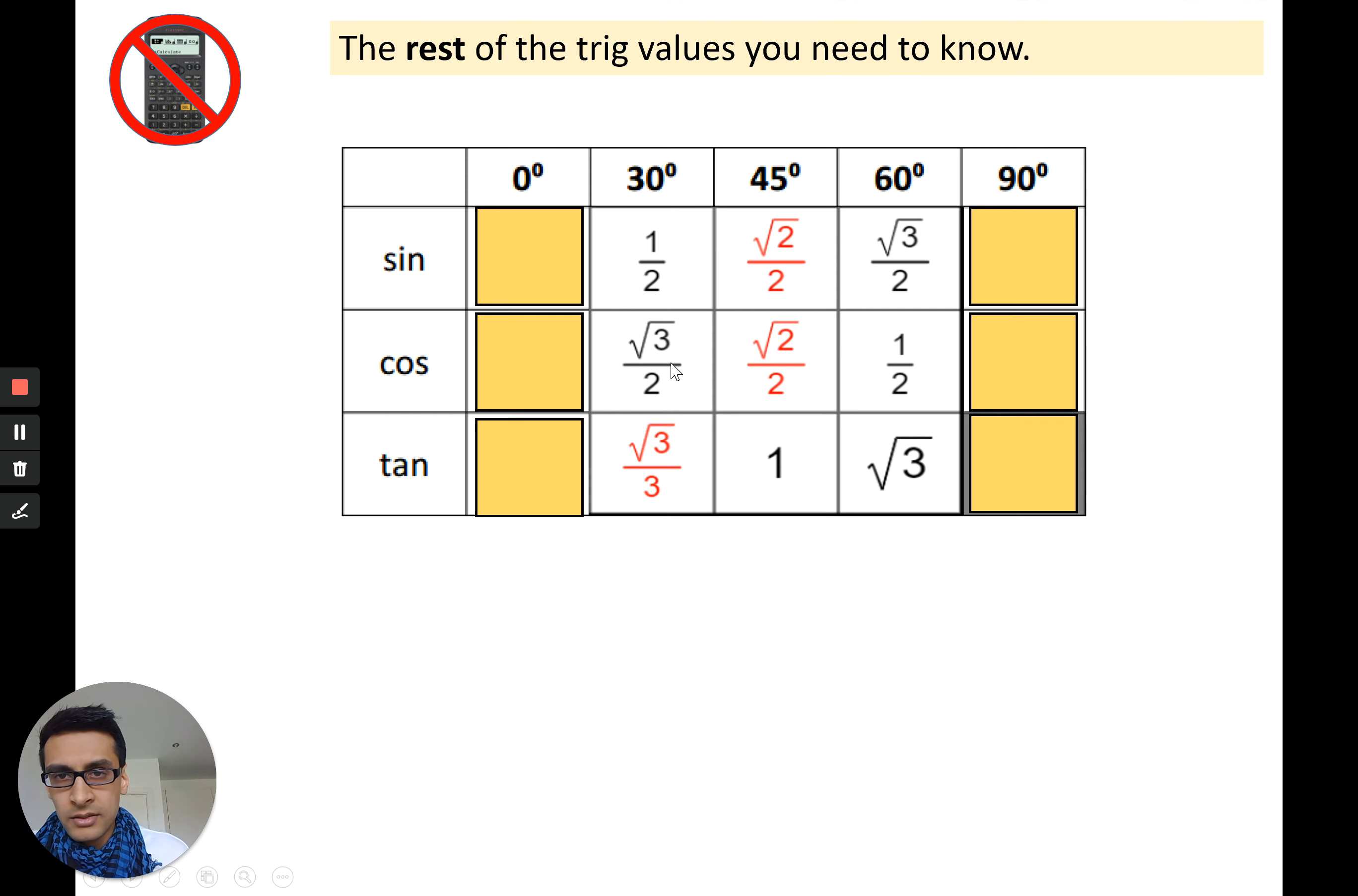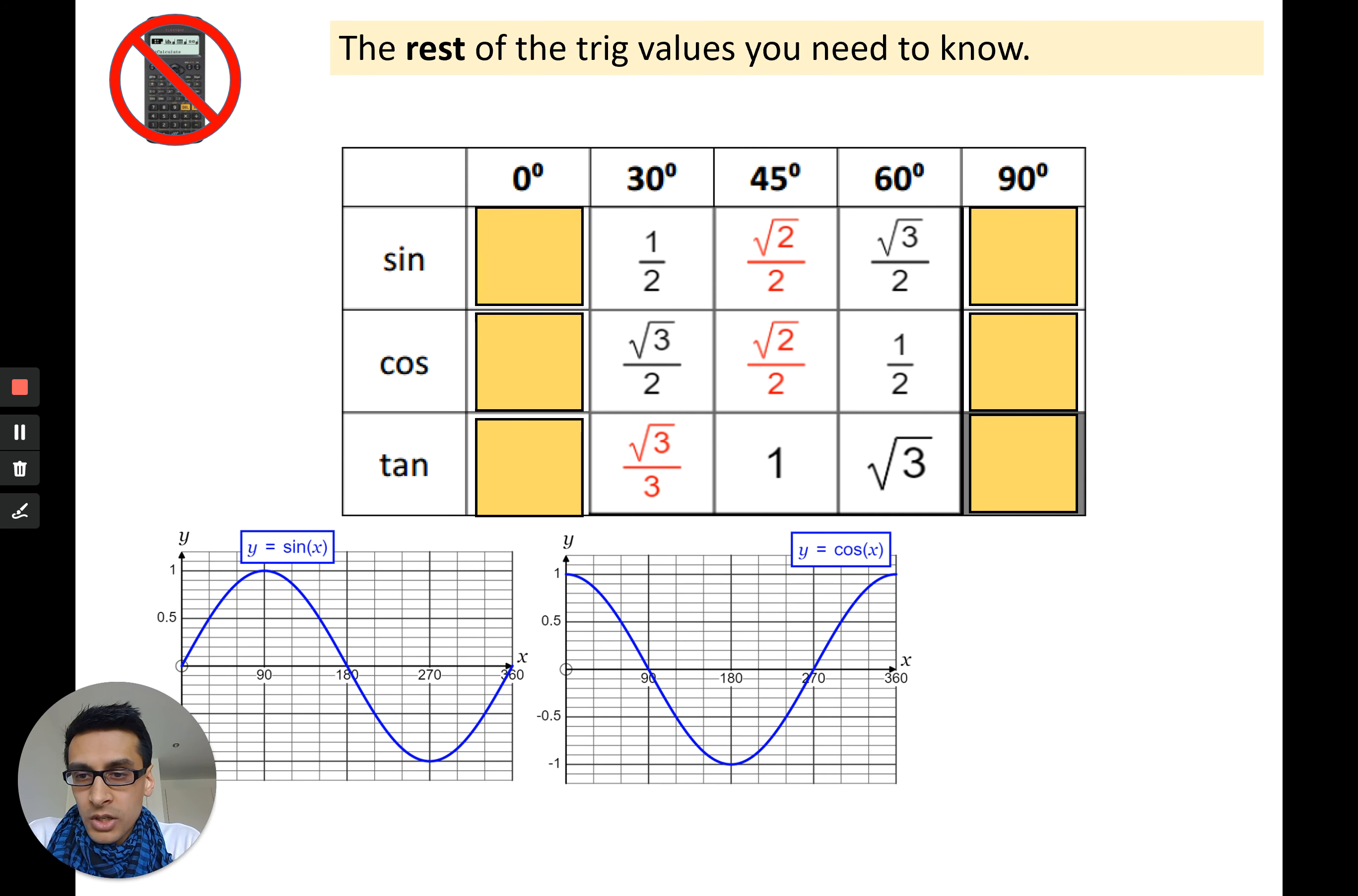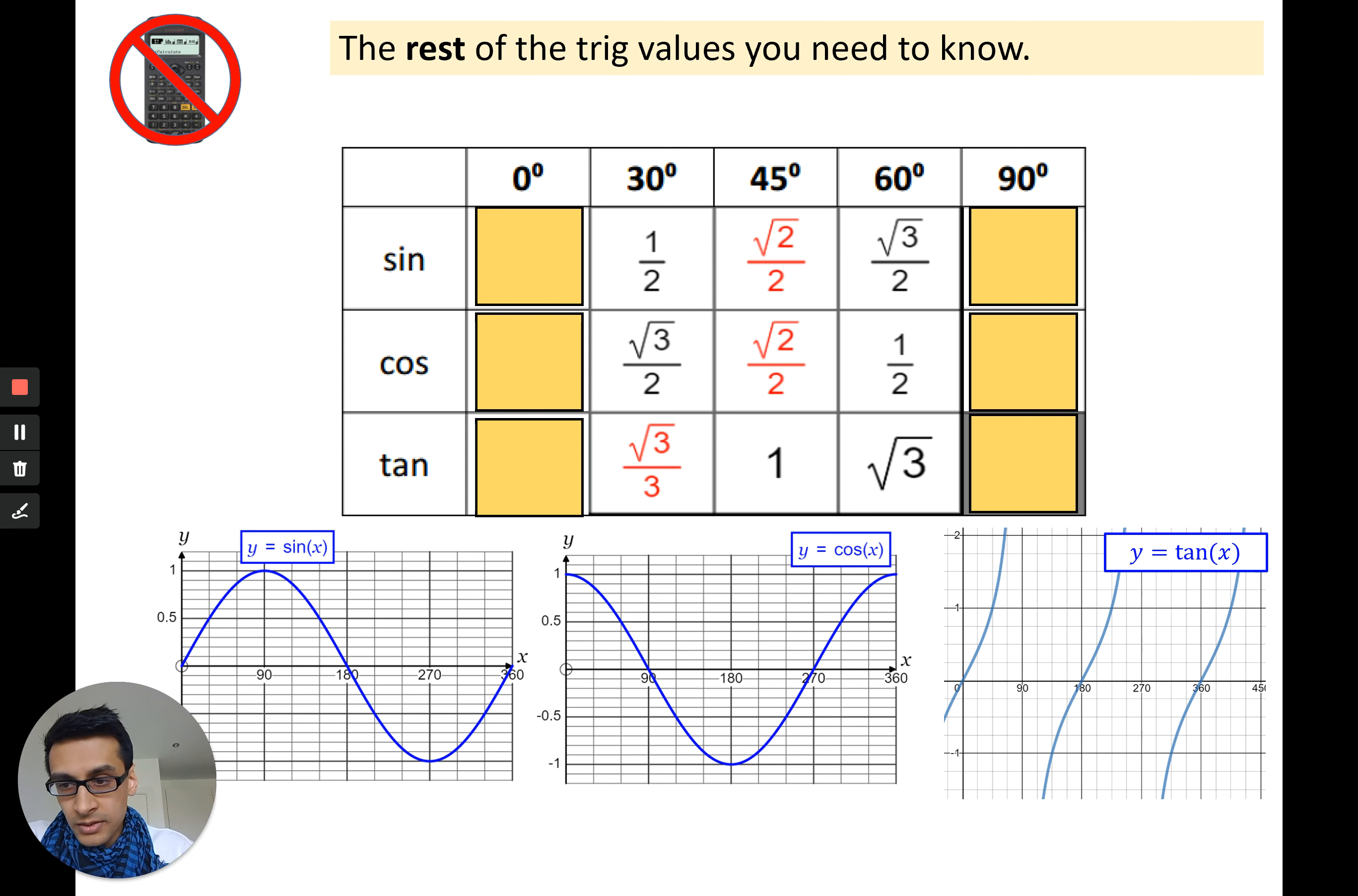The rest of the trig values you need to know include 0 and 90. You very rarely come across them, but they're actually fairly straightforward to memorize. Now using a triangle with a zero degree angle is no longer a triangle, it's just a line. So you actually use the trigonometric graphs to work out the missing values. You are required to know these trig graphs already, which we've done in class. You just sketch out the trig graphs. You're probably not going to need to sketch them out every time. You can just do this in your head, but I've put them on the slides here for you.